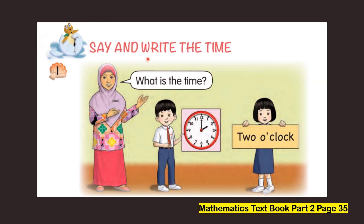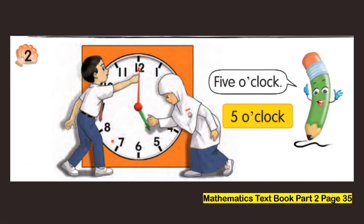Now we are going to learn how to say and write the time using an hour. Look at this clock face. What is the time? The hour hand shows number two and the minute hand shows twelve, so the time is two o'clock. Look at the clock face — what time is this? The hour hand points to number five and the minute hand points to twelve. The time is five o'clock.